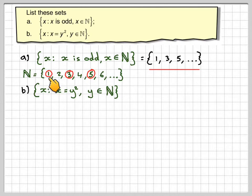So if the first number in N is 1, then the first number will be 1 squared, because we're going to square each number in y, and that then becomes equal to x, which is our set.